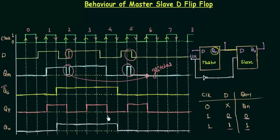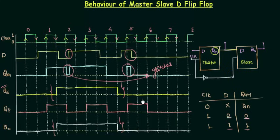If you want to remove the glitches you have to use the master-slave flip-flop. The second important result is the relation between the master-slave flip-flop and the negative edge triggered flip-flop. You can see the master-slave flip-flop's output is the same as the negative edge triggered flip-flop's output. So the master-slave flip-flop works as a negative edge triggered flip-flop.